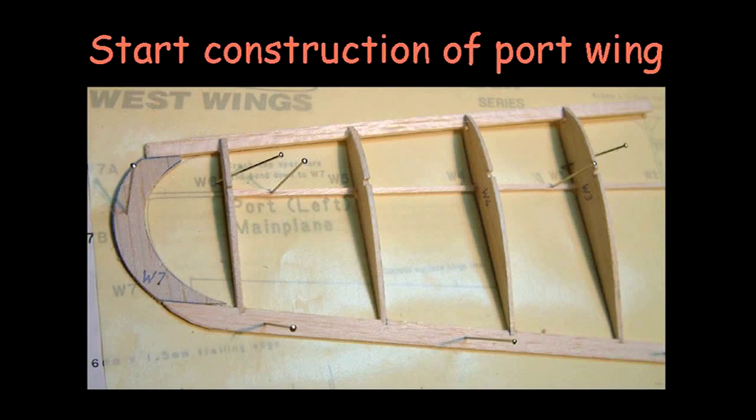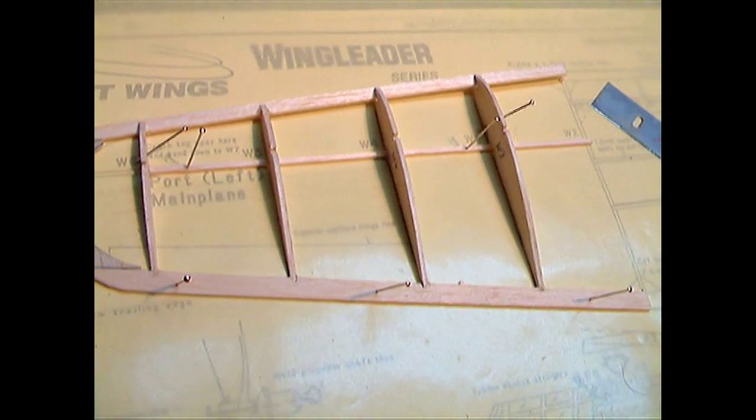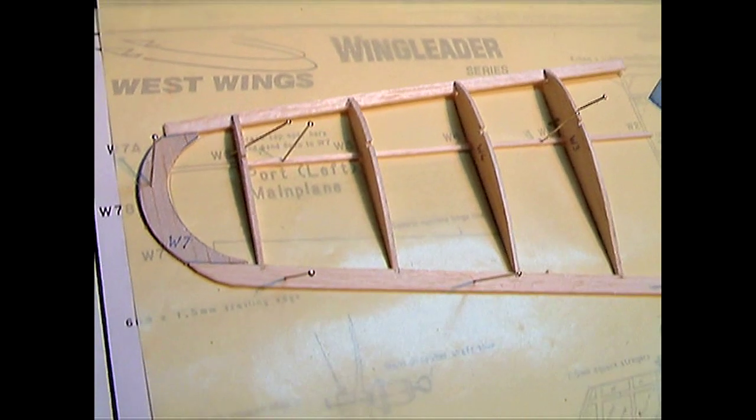The construction of the outer wings is quite straightforward, but the top stringer should be left for later.